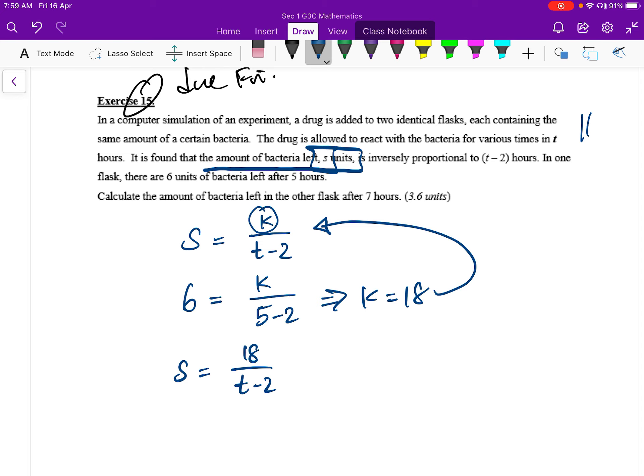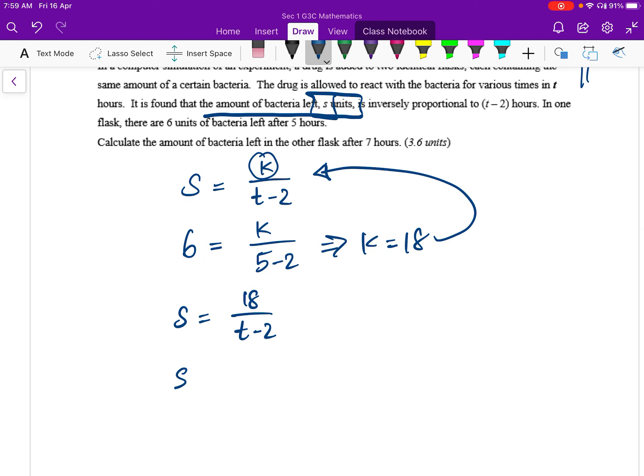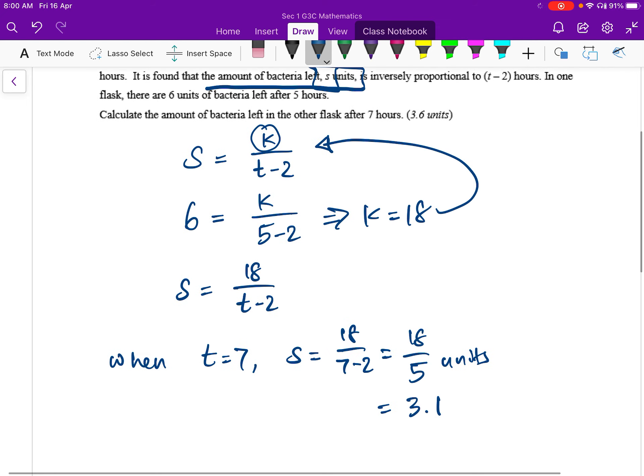Then they want us to calculate the amount of bacteria left in the other flask after 7 hours. Not difficult. T goes to 7. When T goes to 7, what is the value of S? So you can present it this way. When T equals to 7, S equals to 18 over 7 minus 2. So 18 over 5, which is 3.6 units.